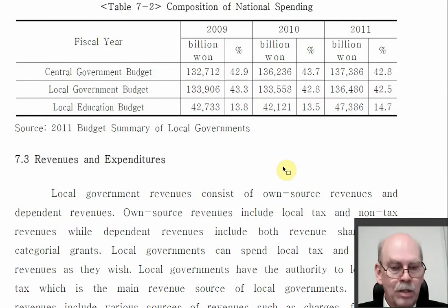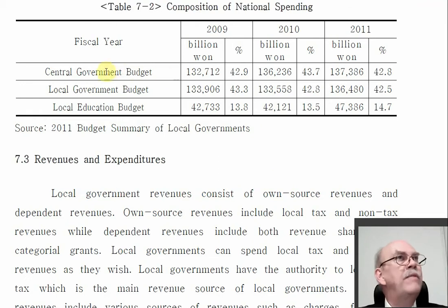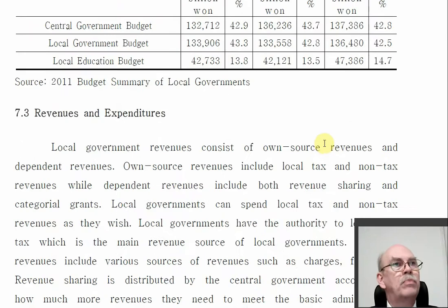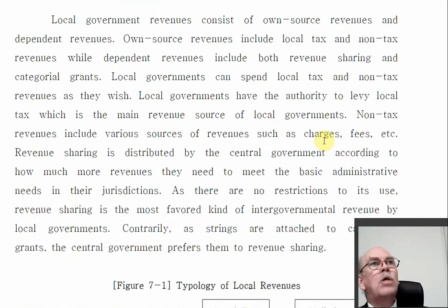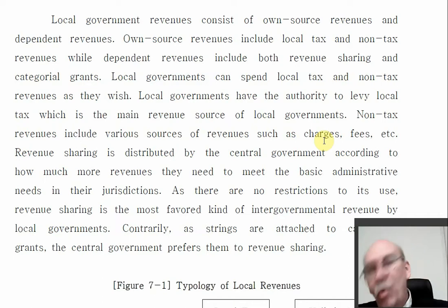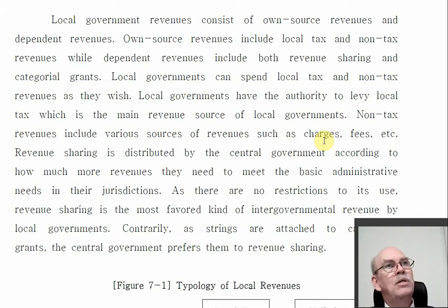We've talked a little about taxes and fees and where they come from. Now let's talk about the case in Korea. Local government revenue — the money coming in to local government — is in two types: own source and dependent revenues. Own source means the money that we make, that we get by ourselves. Dependent revenues is money that we get from somebody else — we depend on them.